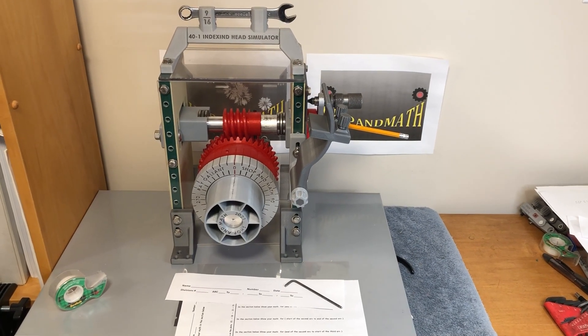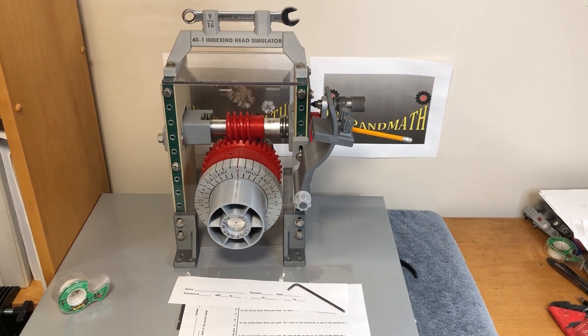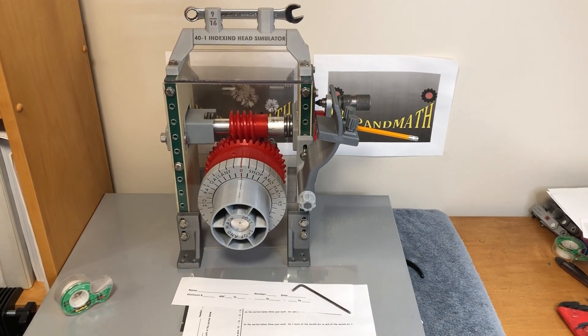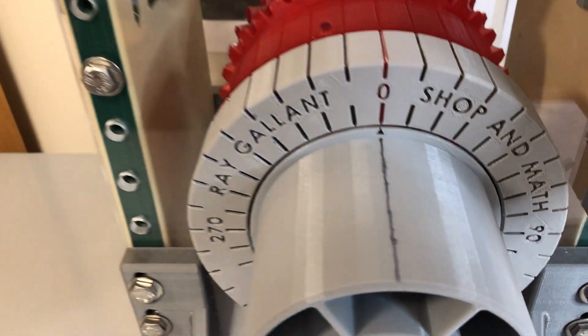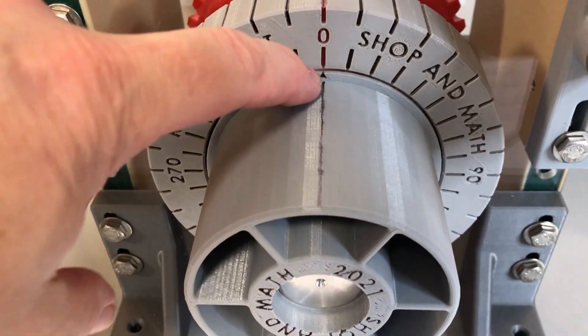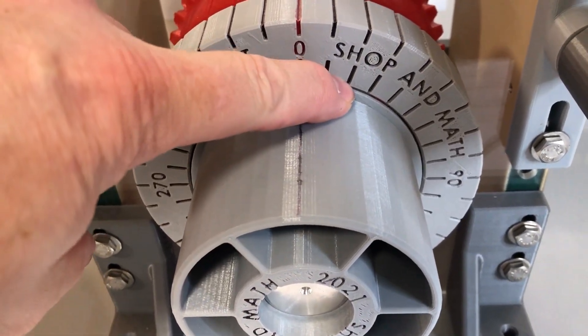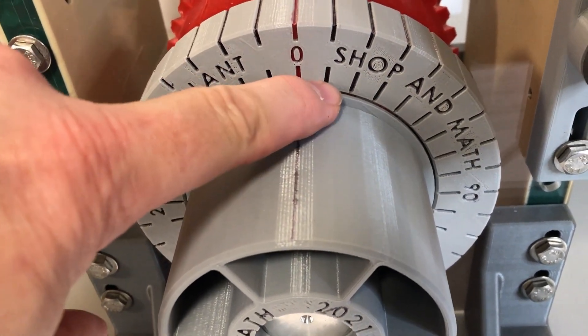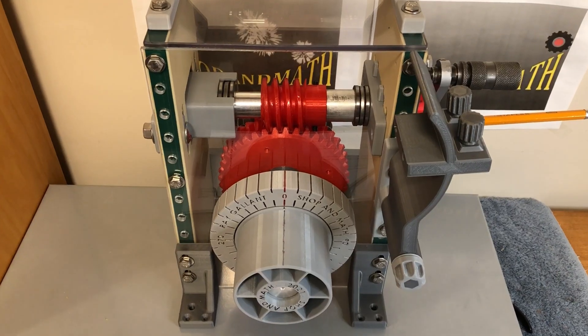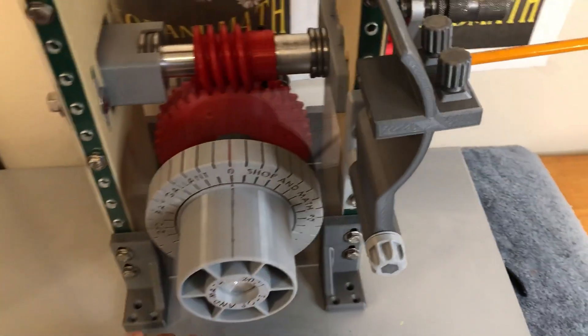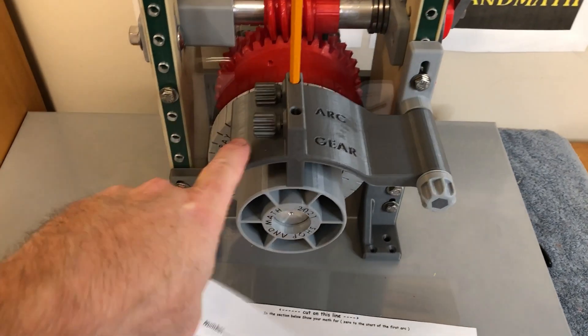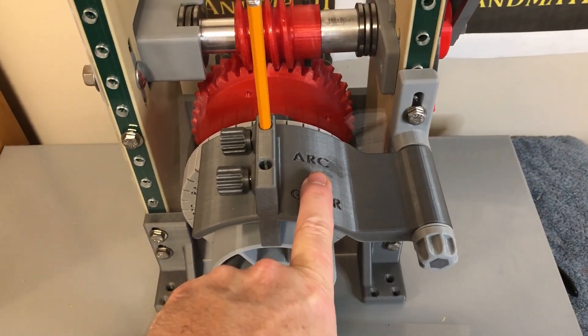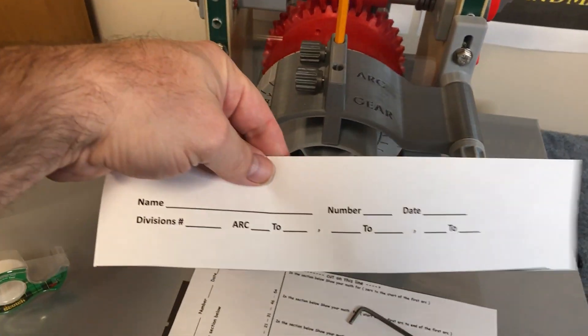Using the indexing head simulator we're going to demonstrate how to index 19 degrees 20 minutes. First what we're going to do is we're going to make sure that we're set to zero. So when this drum moves it should almost come to this line here because each one of these lines is 10 degrees. So what I'm going to do now is I'm going to put this paper around the drum so that I can mark my arc onto my piece of paper.